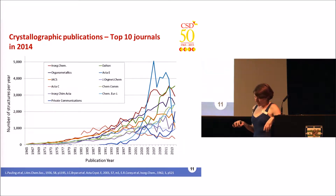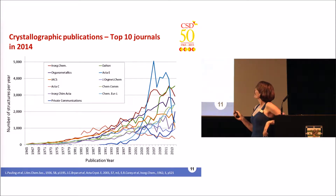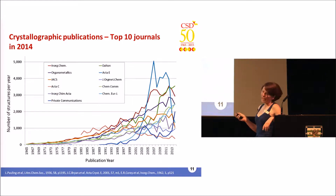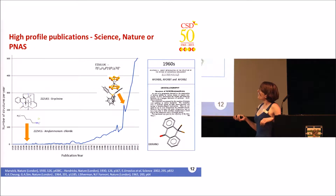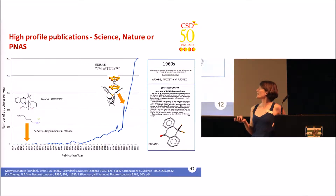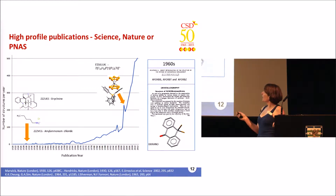Where is data being published? It's obviously changed over the years as different journals have emerged. At the moment the top three are Inorganic Chemistry, Dalton, and ChemComm — so ACS and the RSC are really leading the way. It's also really nice to see structures being published in high-impact publications; the number of structures published in journals such as Science, Nature, and PNAS has taken a dramatic increase since the 2000s.